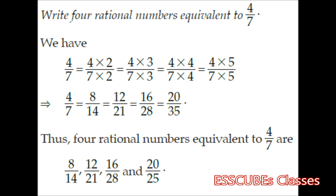Suppose you are asked to write 4 rational numbers equivalent to 4 by 7. If I multiply both the numerator and denominator by 2, 3, 4, or 5, we get 8 by 14, 12 by 21, 16 by 28, and 20 by 35. If you check, they all come to the same value — that is, 4 by 7. Thus, 4 rational numbers equivalent to 4 by 7 are 8 by 14, 12 by 21, 16 by 28, and 20 by 35.